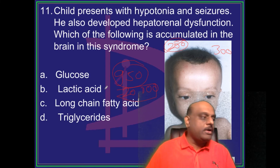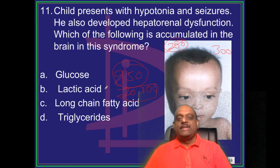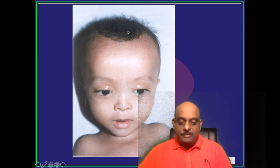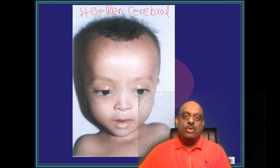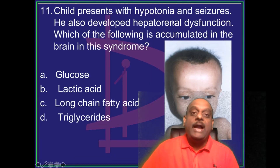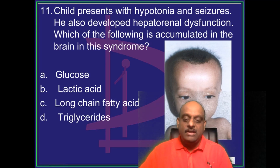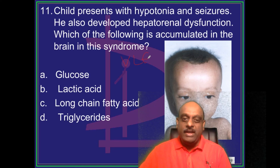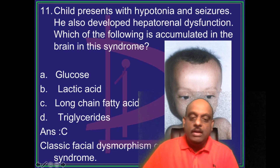Roshan Yadav is proposing long-chain fatty acids. This condition is called hepato-reno-cerebral syndrome of Zellweger, where the problem is in the handling of very long-chain fatty acids (VLCFAs). You need to remember: VLCFAs — very long-chain fatty acids — are the key issue in Zellweger syndrome.